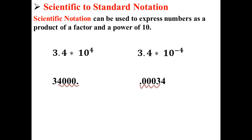So 3.4 times 10 to the fourth is equal to 34,000, while 3.4 times 10 to the negative fourth is equal to 0.00034. Here we have converted from scientific to standard notation.